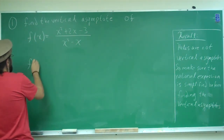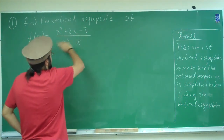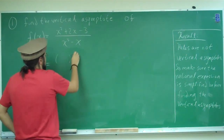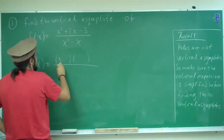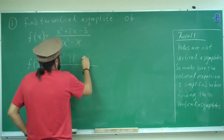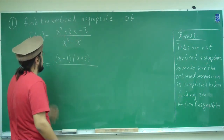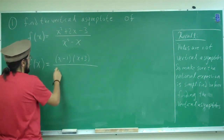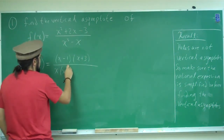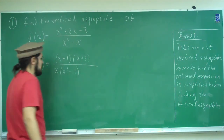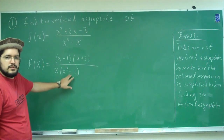Let's go ahead and simplify this function by factoring. The numerator factors into x plus 3 times x minus 1 — that gives minus 3 and then plus 2 in the middle. For the denominator, factor out an x and we're left with x times x squared minus 1. Since x squared minus 1 is a difference of squares, we can factor further.